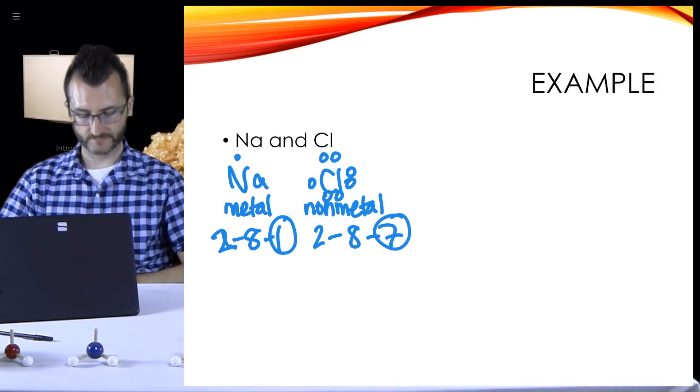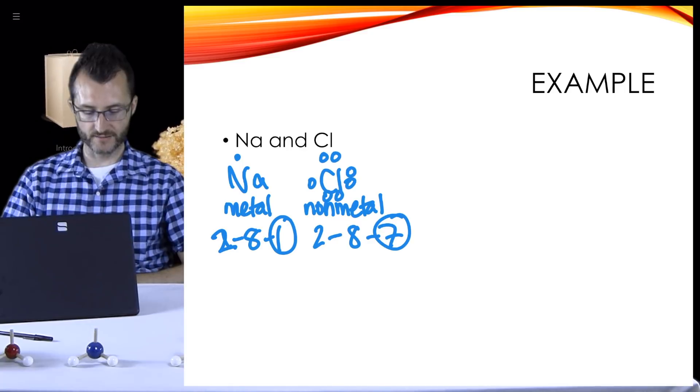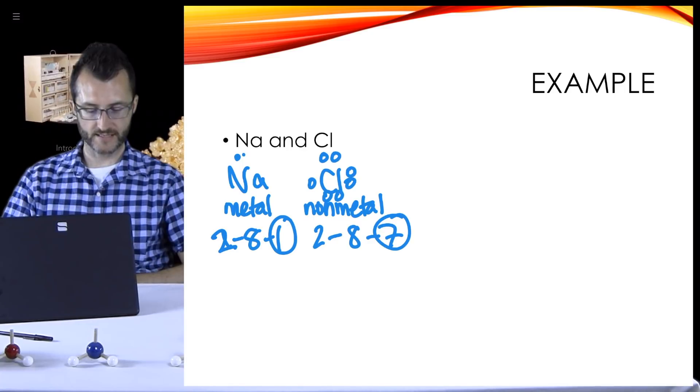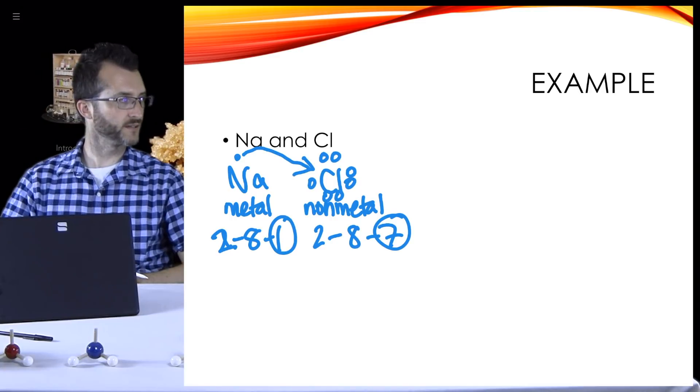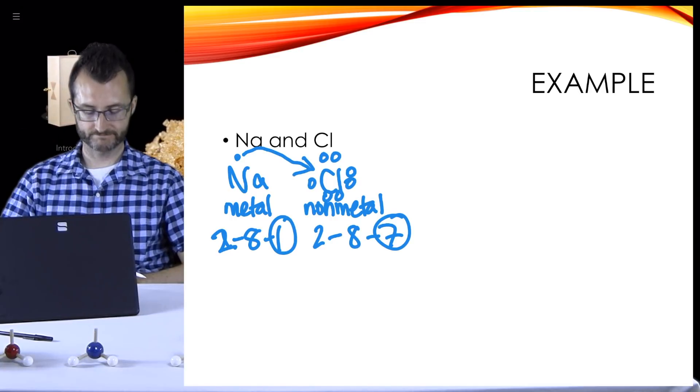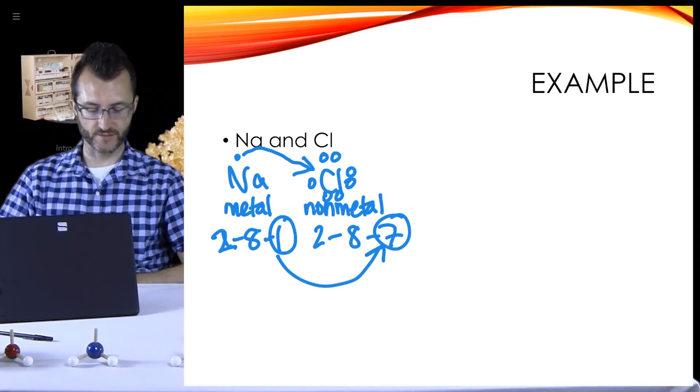And then for chlorine, I need 7. I kind of want to keep track of what the different electrons look like when I put them together, so I'll do open circles here. So 1, 2, 3, 4, 5, 6, 7. Good job on the order there. Now we have to show the transfer of electrons.